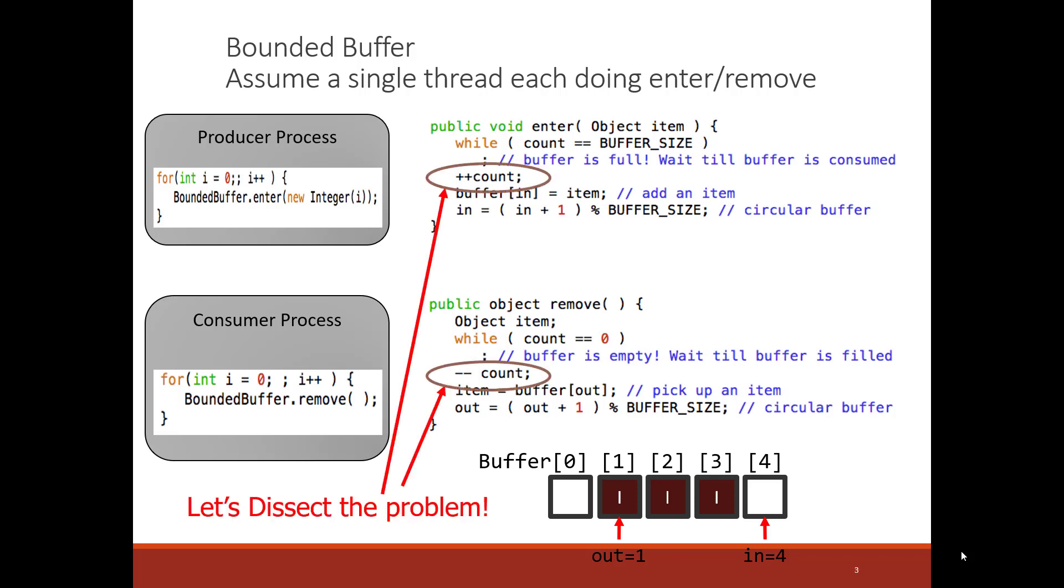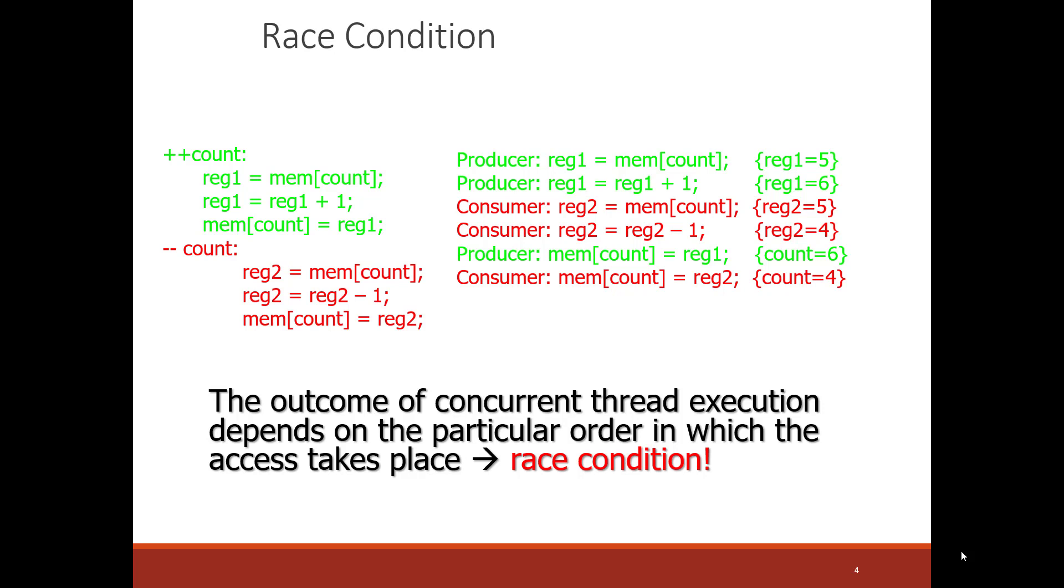So, look through the code, assuming two threads, pause this video and see if you can find a race condition. Okay, I assume you've done that and you're back. Let's go ahead and look at what could be the race condition here. Now, I'm going to look at the count, the increment and the decrement of the count in a little more detail at the machine level language.